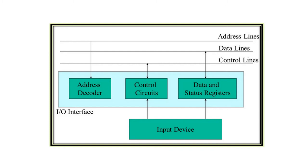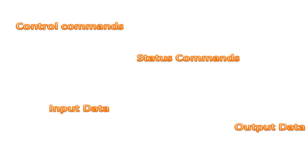There are four types of commands that an interface may receive. Control commands are used to activate the peripheral and to inform it what to do. Status commands are used to test various status conditions in the interface and their peripherals. Output data causes the interface to respond by transferring data from bus into one of the registers. Input data: the interface receives an item of data from the peripheral and places it on the data lines.